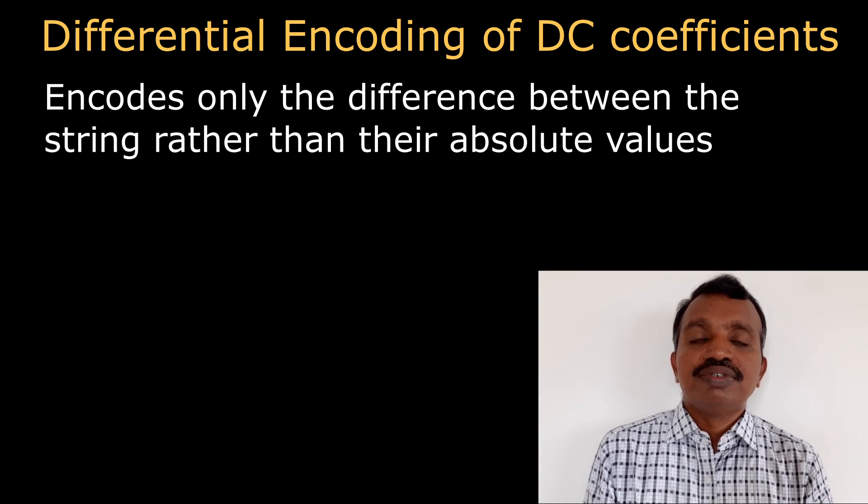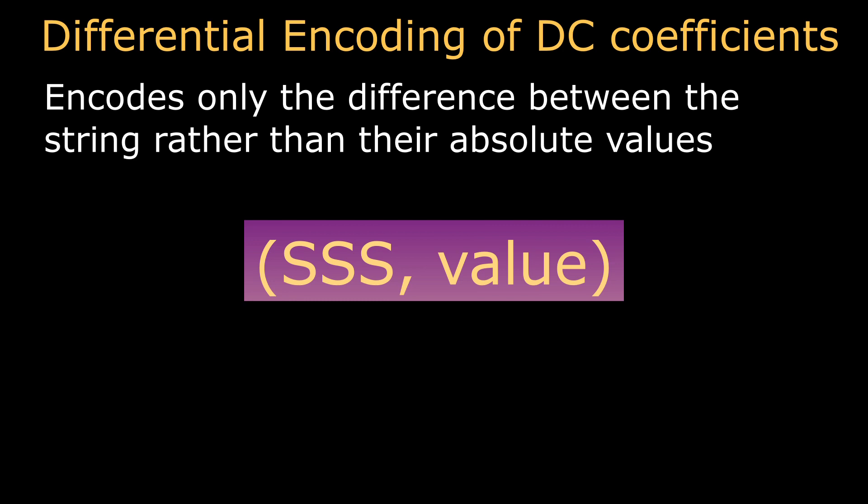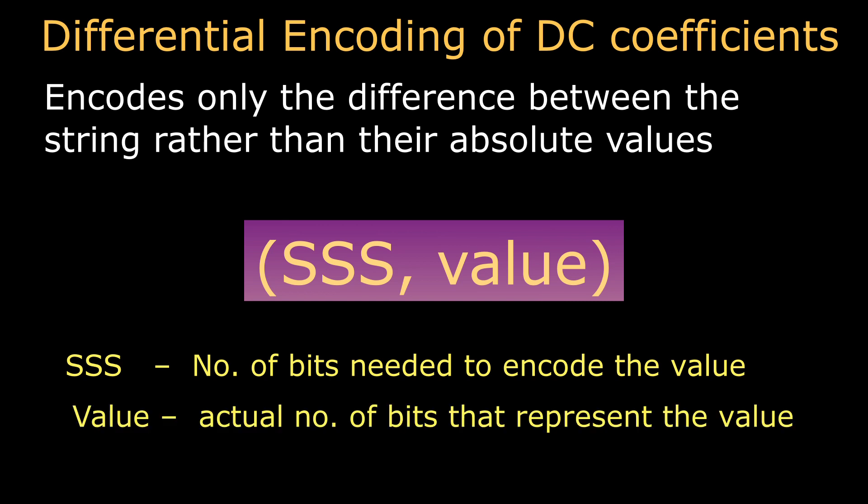Only the difference will be encoded. The DC coefficients are encoded in the format SSS,value. Here SSS represents the number of bits needed to encode the value, and the value represents the actual number of bits that represent the DC coefficient.